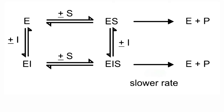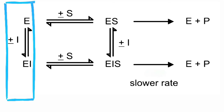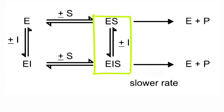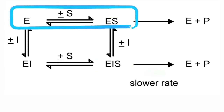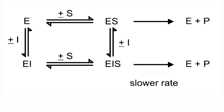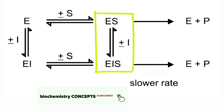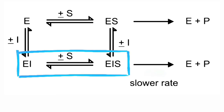This non-competitive inhibitor can bind to the free enzyme, or it may bind with the enzyme-substrate complex. In the first situation, the substrate binds with the enzyme to form an enzyme-substrate complex, and to this complex the inhibitor may bind to form an enzyme-inhibitor-substrate complex. In the other situation, the inhibitor can bind with the free enzyme to form an enzyme-inhibitor complex.